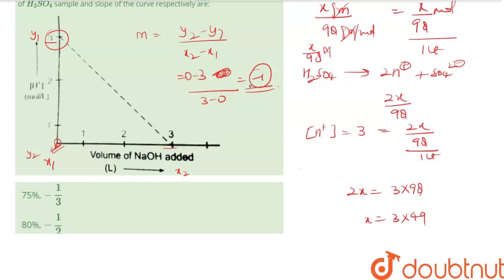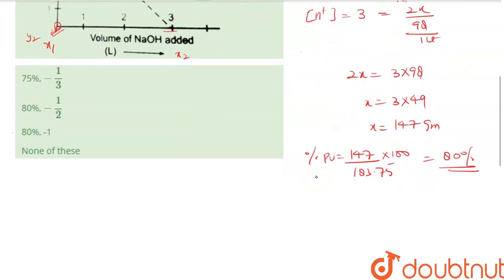So this slope is minus 1. So that is why our answer will be 3. I hope this answered your question, thank you.